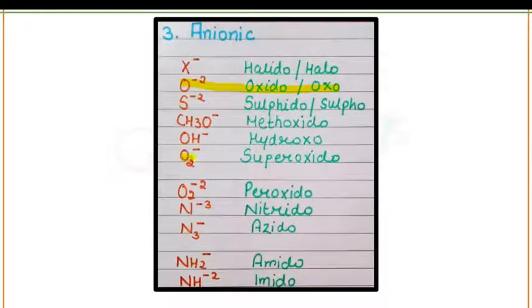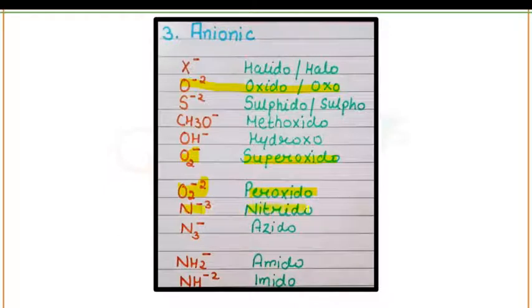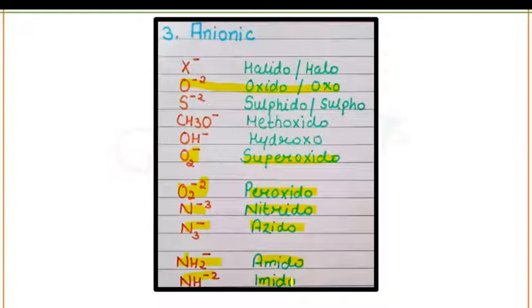Next is O2(2-), that is peroxido. Then N3- is nitrido, N3- is azido, NH2- is amido, and NH2- is also amido. All the examples are very important.